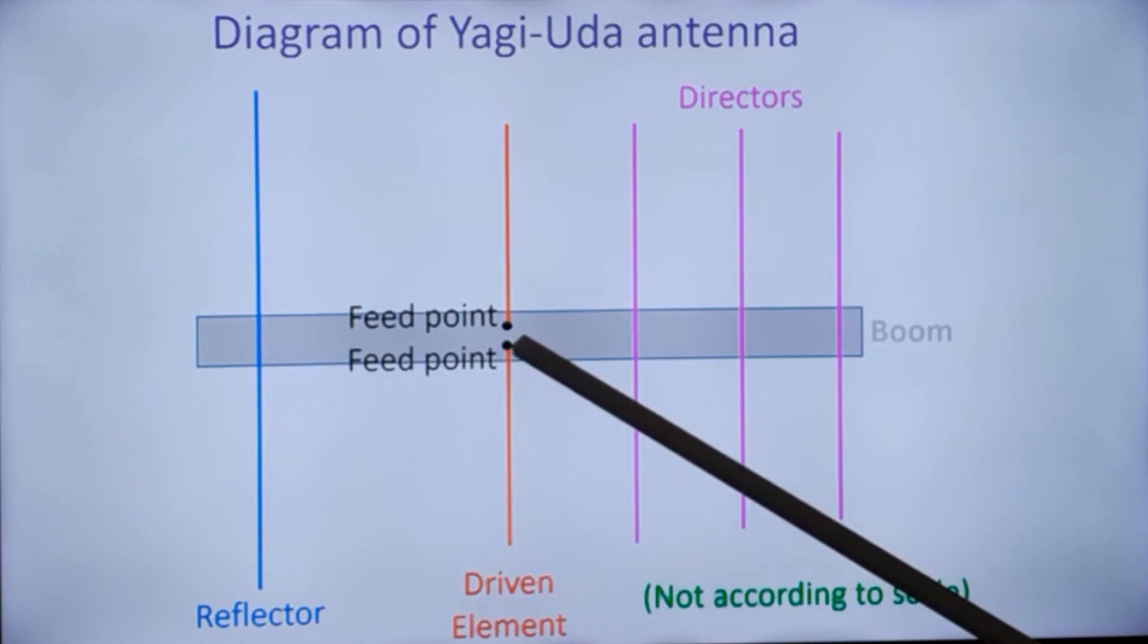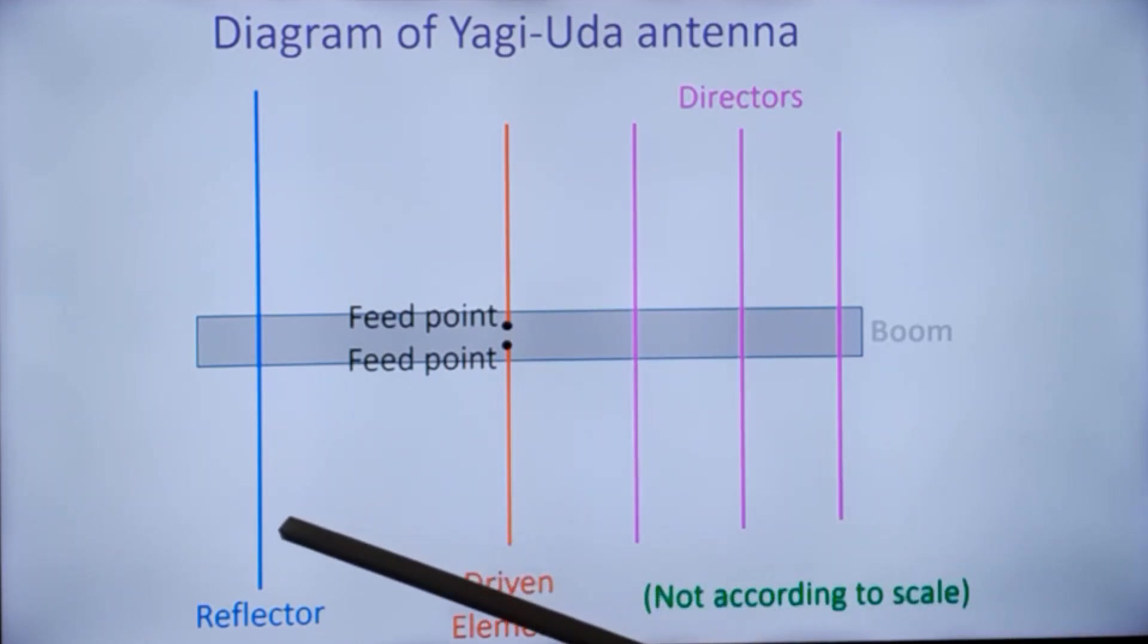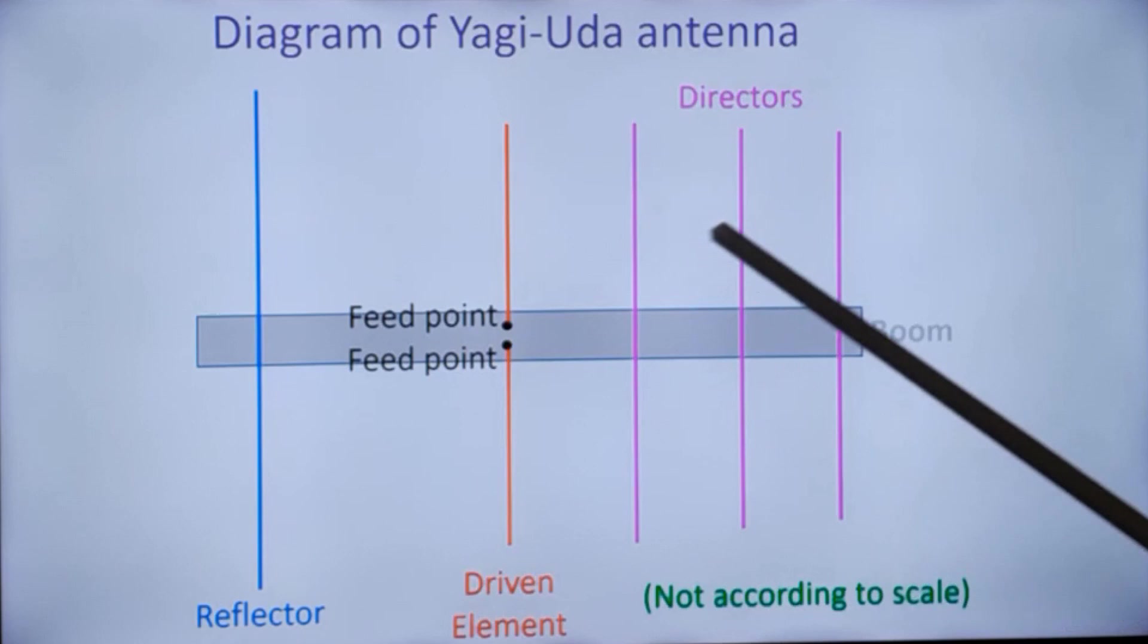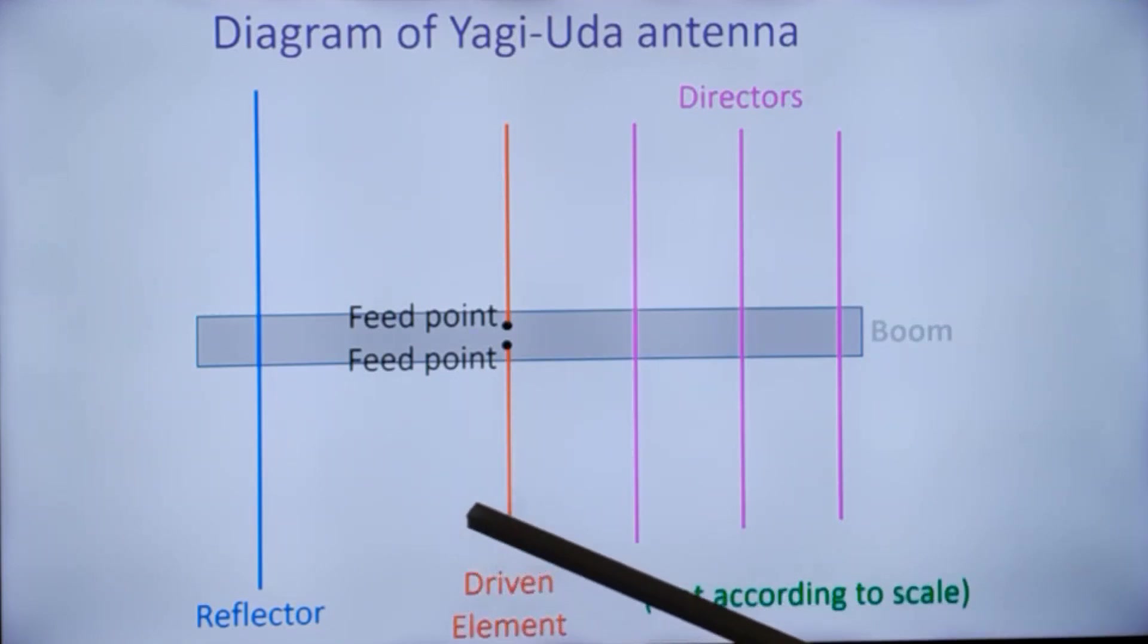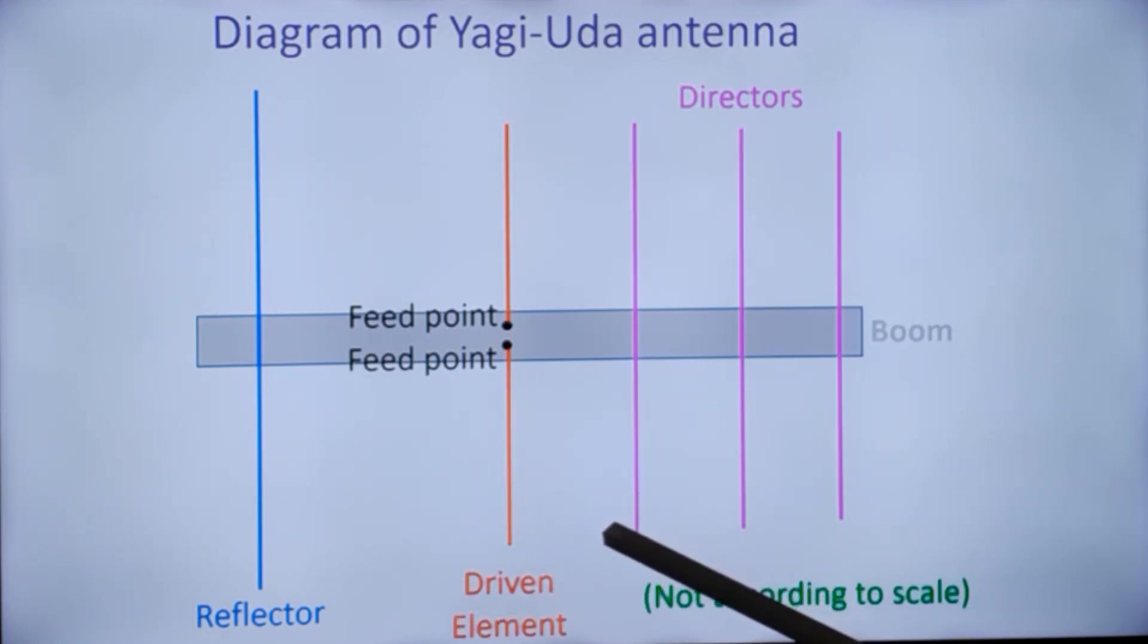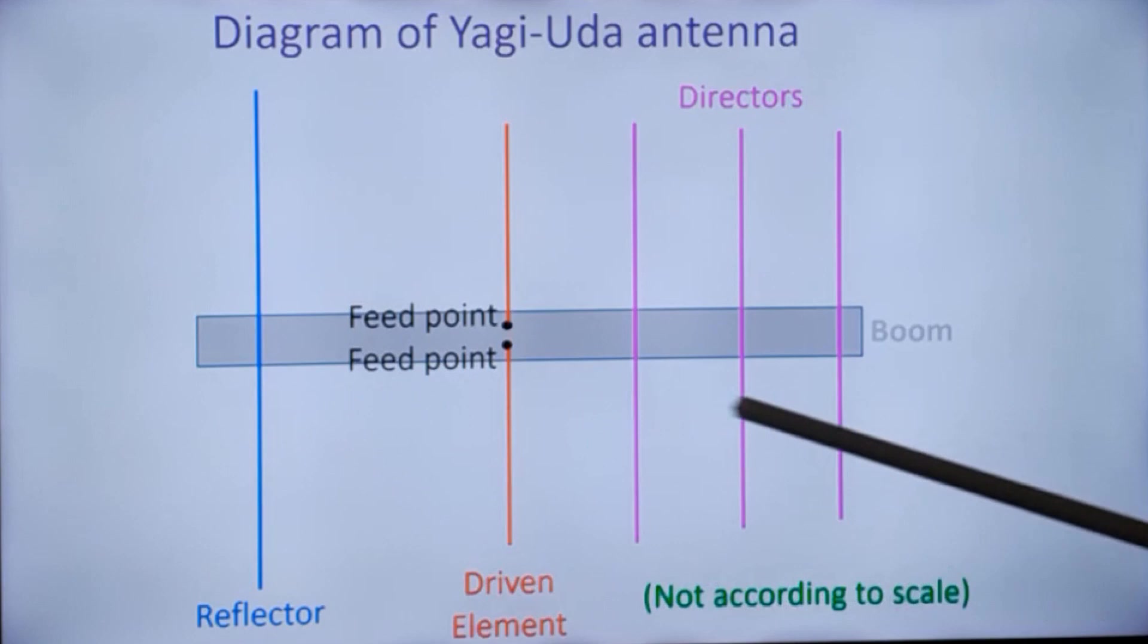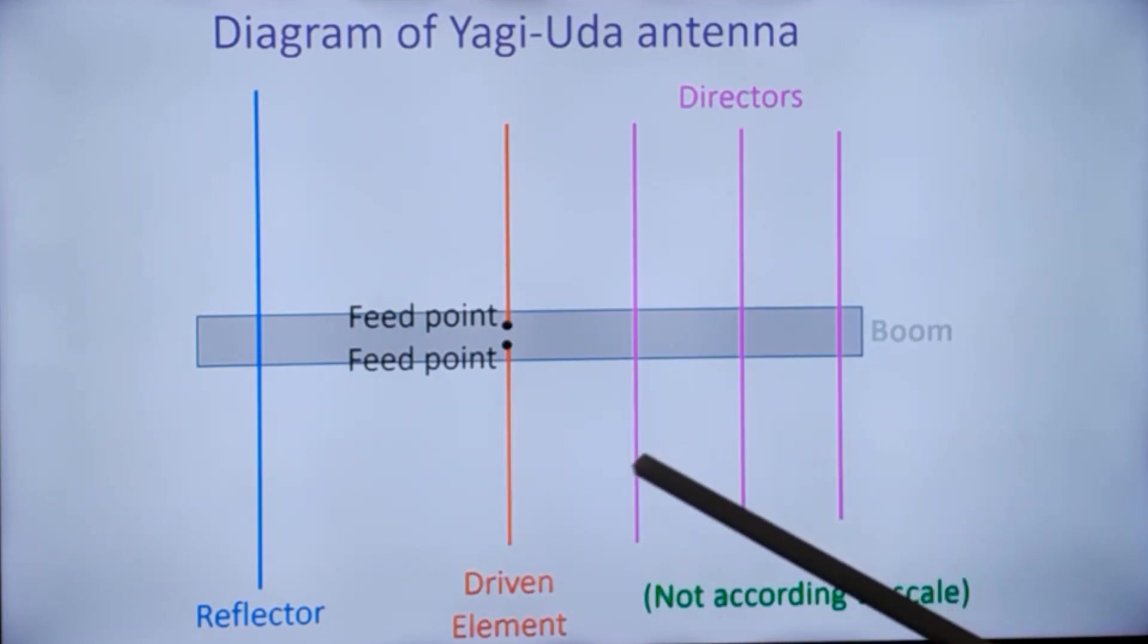This is the driven element typically a half wave dipole with quarter-lambda on either side. The signal from a half wave dipole will go in both directions. A half wave dipole has a gain of about 2.15 decibels compared to an isotropic antenna. The gain is expressed as dBi compared to an isotropic antenna which radiates all around spherically.